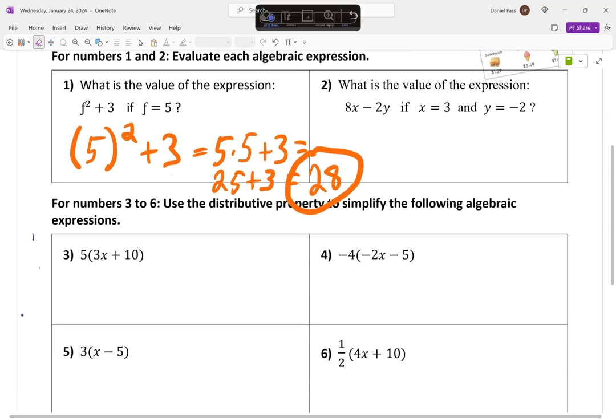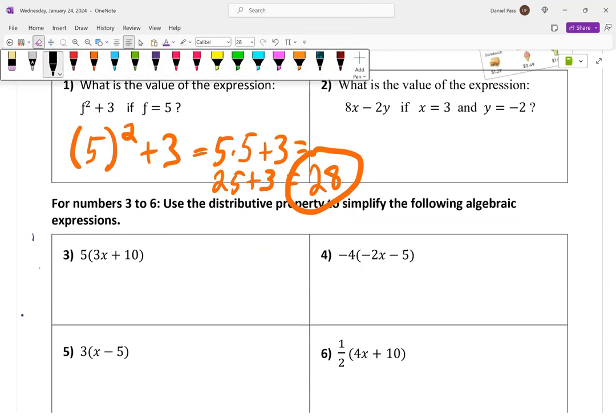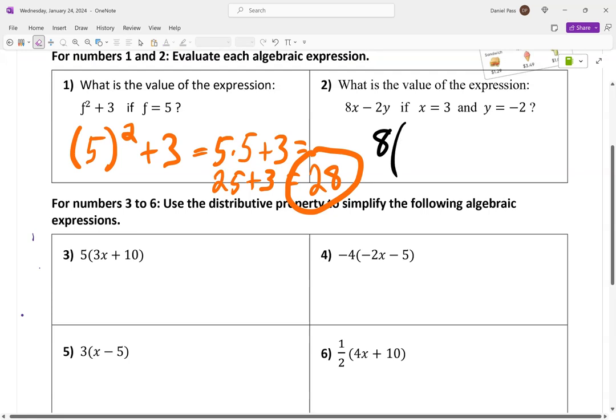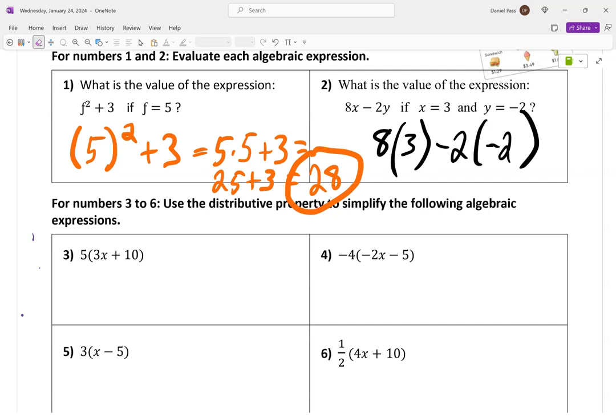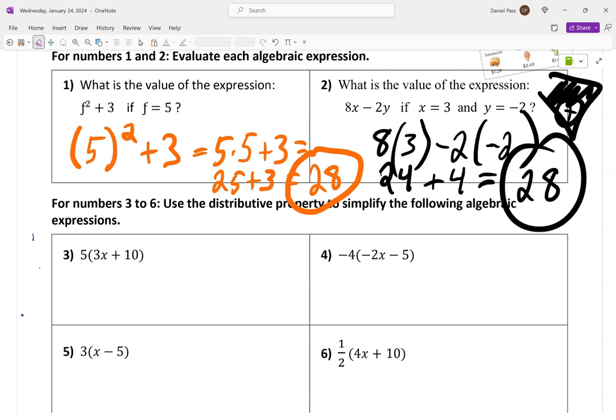How do we do number two? Since it's eight parentheses, you want to show your work with the parentheses here. Eight parentheses, three, and then negative two, and then parentheses, another negative two. Very good. Now, I like how she said negative two instead of minus two. Okay, go ahead. Eight times three is twenty-four. Yes. And then negative two multiplied by negative two is equal to four. Positive four. Both of these problems were equal to twenty-eight. Let's hear it for Mae.